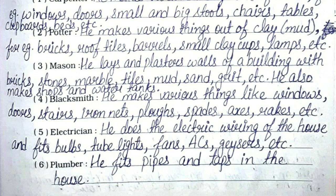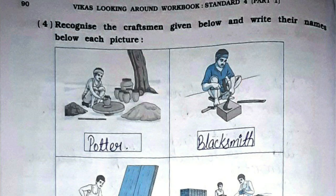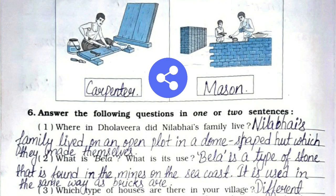Fifth, electrician: he does the electric wiring of the house and fits bulbs, tube lights, fans, geysers, etc. Sixth, plumber: he fits pipes and taps in the house. Question four: Recognize the craftsmen given below and write their names — first is potter, second is blacksmith, third is carpenter, and fourth is mason.